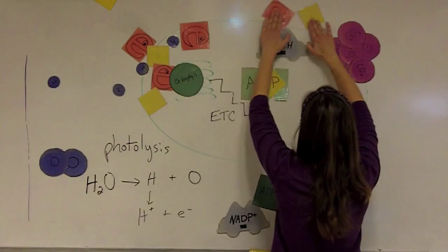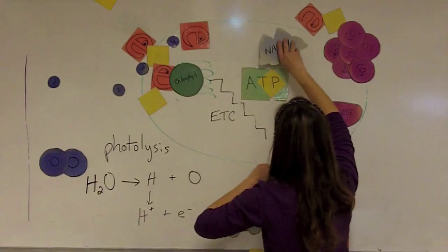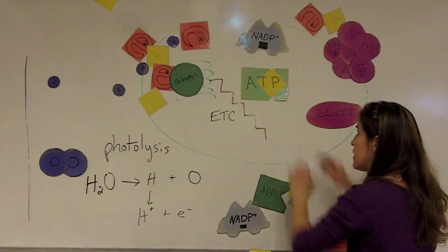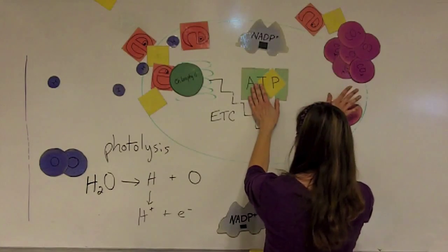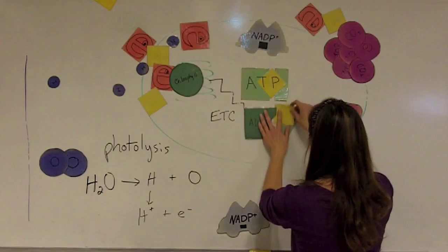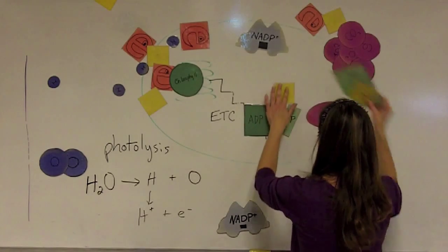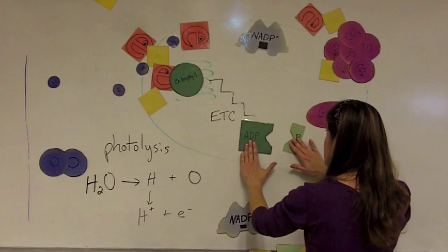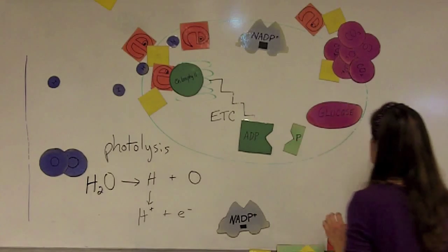So NADPH will release its electrons and its energy. And it will go back to being NADP+. The ATP molecule, a third phosphate, will be broken off. The energy will go into the Calvin cycle, and ADP and phosphate are now uncharged.